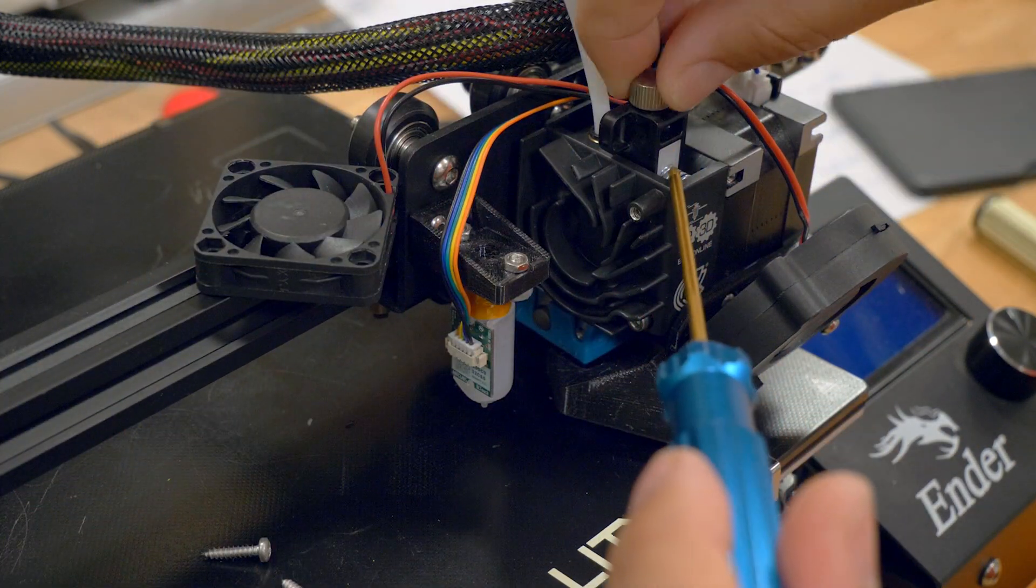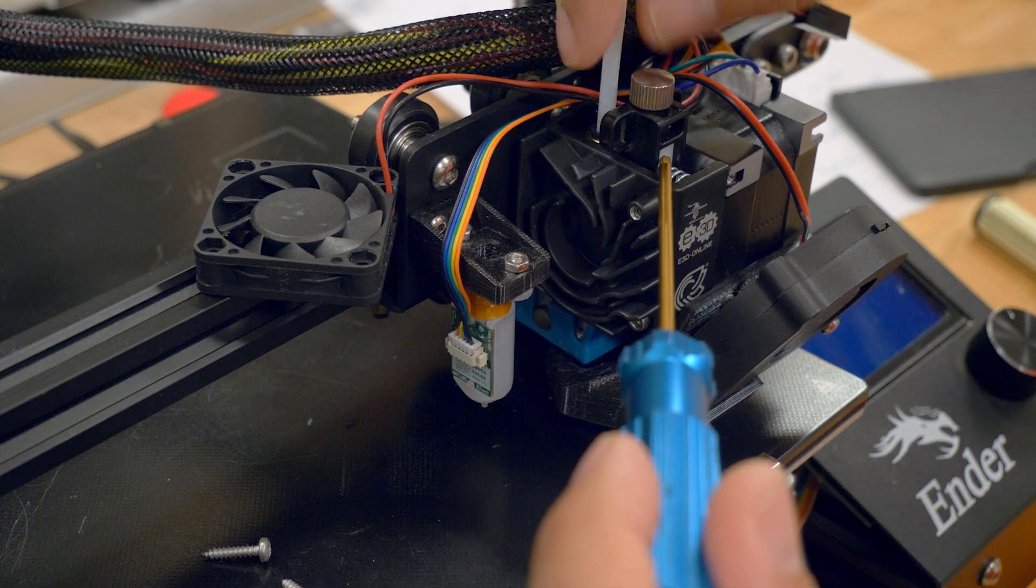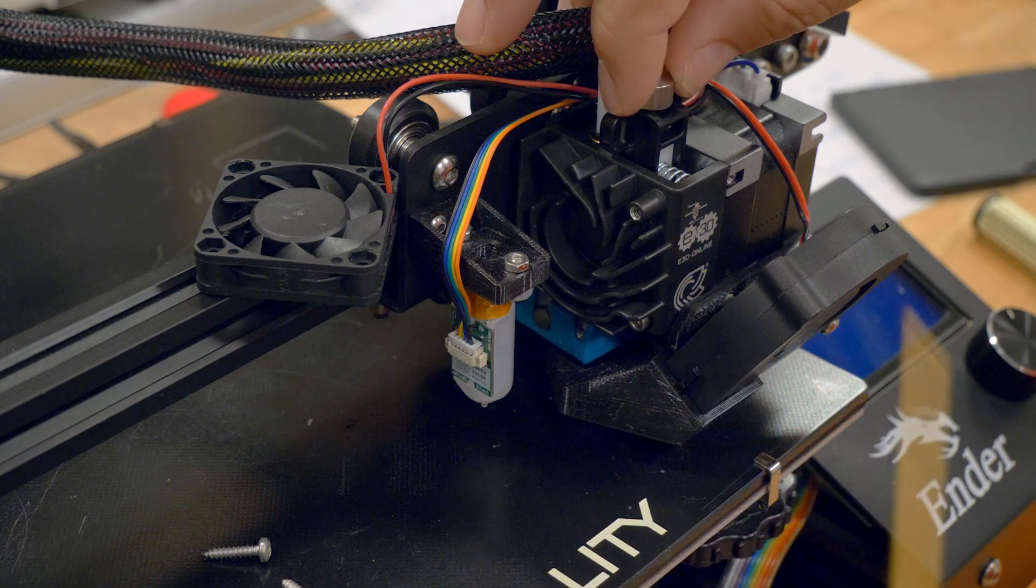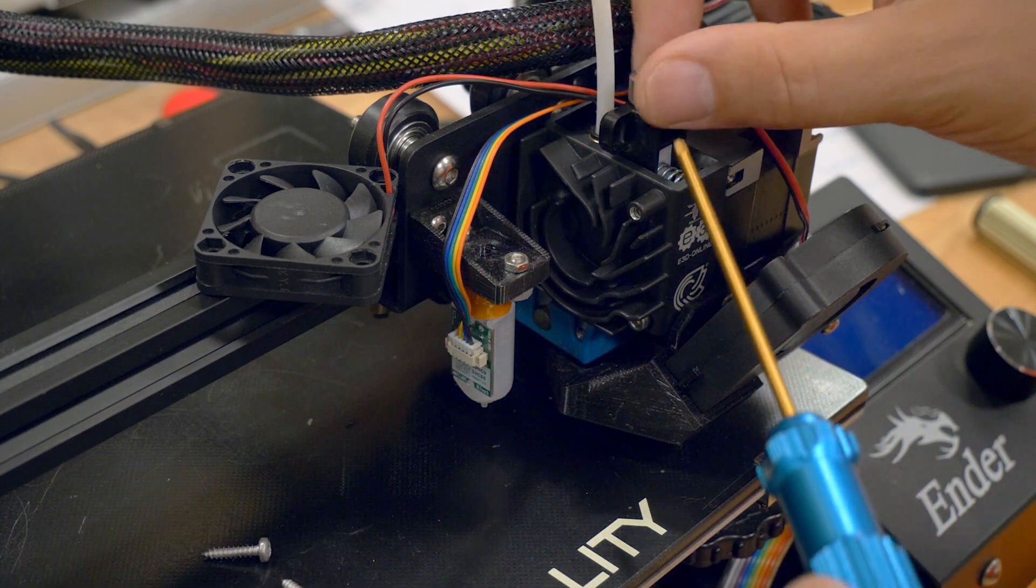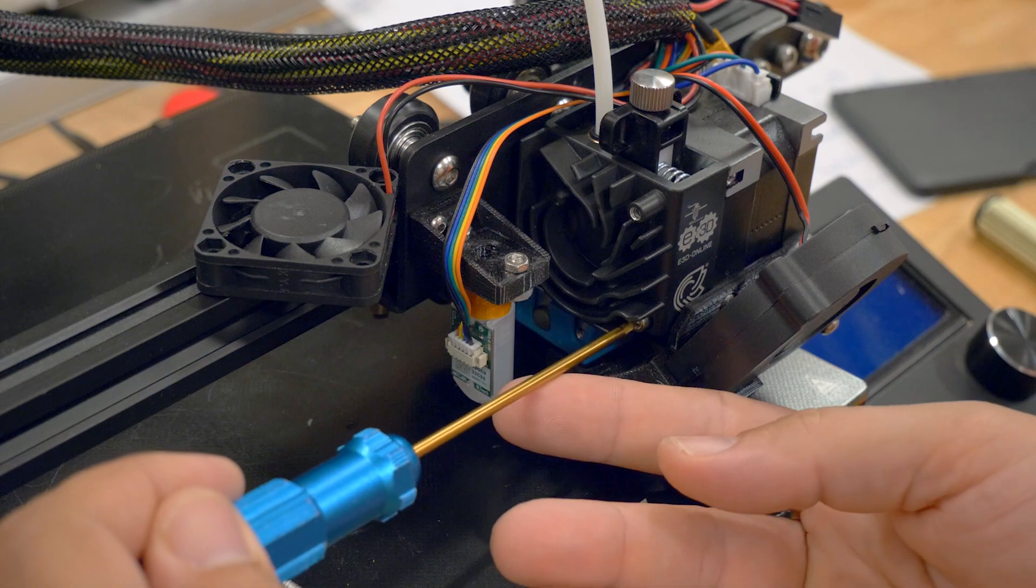But before we do that, we're going to want to take all the tension off the drive gear spring, this tension spring here. Take all the tension off it to prevent that spring from going flying. If you take this all the way out, the screw will fall out. We don't want that either. So just a little tension to hold it in place.